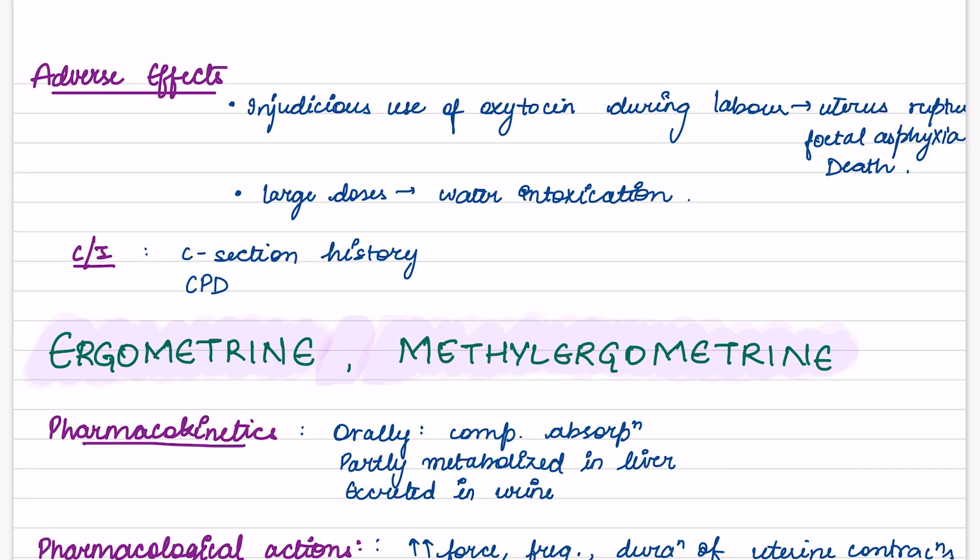What are the adverse effects of oxytocin? Injudicious use of oxytocin during labor can lead to uterus rupture and fetal asphyxia which can further lead to death. Large doses lead to water intoxication. Contraindications are C-section history and cephalopelvic disproportion.